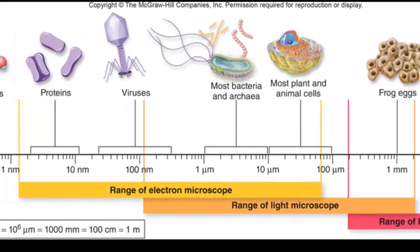Below that you're going to want to use an electron microscope to magnify anything smaller. And as you can see here, the range of an electron microscope is from just above one nanometer to a little bit below one micron.